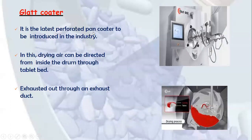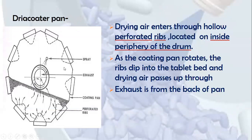In the Hi Coater system, there is an inlet air supply and outlet exhaust air, a tablet bed, fan with perforated flex, and multiple spray atomizers spraying solution throughout the bed. The Glatt Coater is the latest perforated pan coater introduced in the industry, where drying air can be directed from inside the drum through the tablet bed and exhausted out through an exhaust duct. In the Dye Cutter Pan, drying air enters through hollow perforated wreaths located on the inside periphery of the drum; as the pan rotates, the wreaths dip into the tablet bed and drying air passes up through an exhaust piece at the back of the pan.